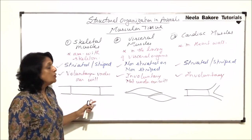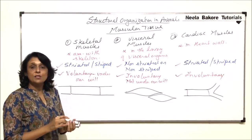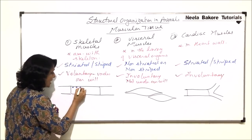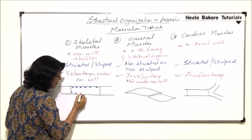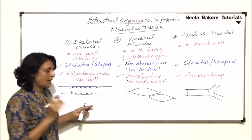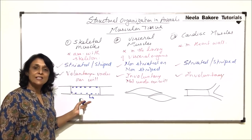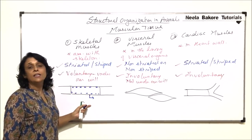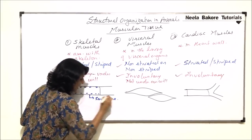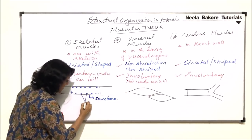Regarding the number of nuclei: in the case of skeletal muscle fibers, the muscle cells are multi-nucleate, and the nuclei are present just beneath the membrane. The membrane of a muscle cell is called sarcolemma — this applies to all these muscle cell types.